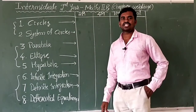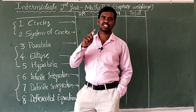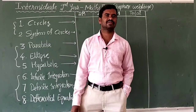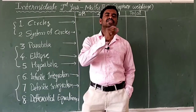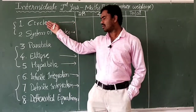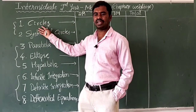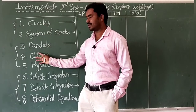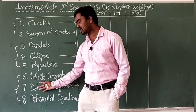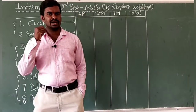Now, intermediate second year Maths 2B chapter-wise weightage. In intermediate second year, for mathematics, Maths 2A and Maths 2B are two subjects, each containing 75 marks — just like first year Maths 1A and 1B. In Maths 2B we have eight chapters: the first two are coordinate geometry, the next three are conic sections, and the last part — chapters 6, 7, 8 — comes under integration.